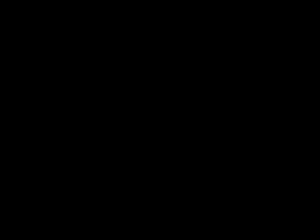Let's say we have a chemical equation where A goes to products. We want to figure out how the concentration of A is going to impact our rate. We have a new equation for rate that we use here, it's called the rate law, which is rate equals k times the concentration of the reactant A raised to some power.